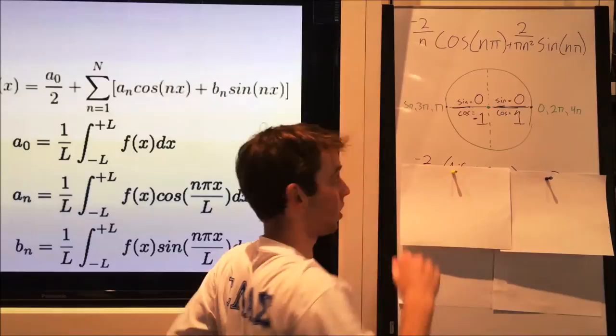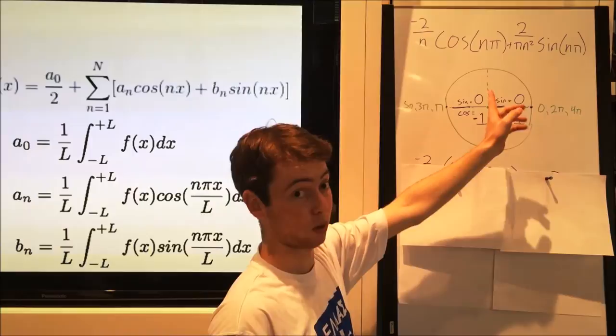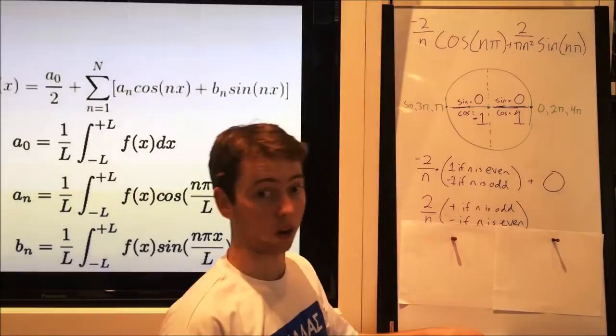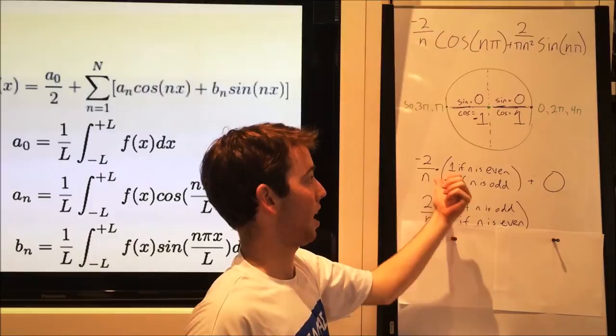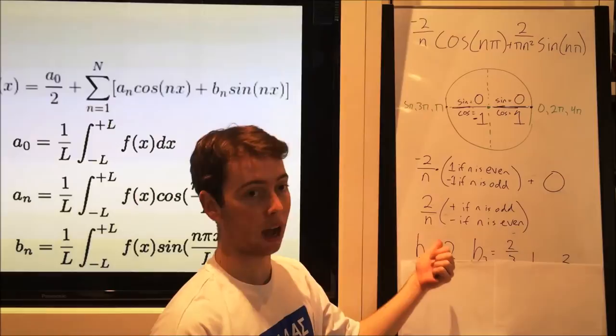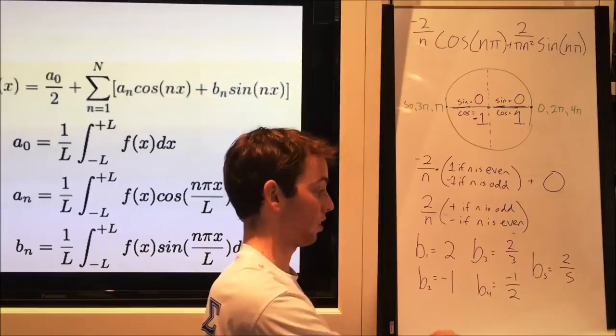On the other hand, the value of cosine of nπ bounces between 1 and negative 1, depending on whether n is even or odd. So we are left, after simplifying and removing sine, we are left of negative 2 over n times 1 if n is even and negative 1 if n is odd. We can further simplify this and find that it is 2 over n and this is positive if n is odd and negative if n is even.